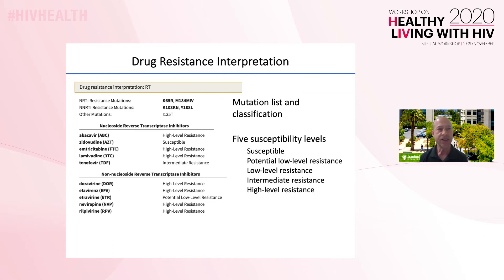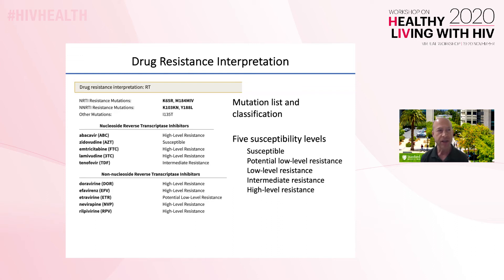For protease and integrase, these categories are major drug-resistant mutations, accessory drug-resistant mutations, and other mutations. The other category is for mutations that do not contribute significantly to HIV drug resistance and are often naturally occurring variants. For each drug, there are five susceptibility levels, and the clinical implications of each of these levels are described in detail in the program's release notes.